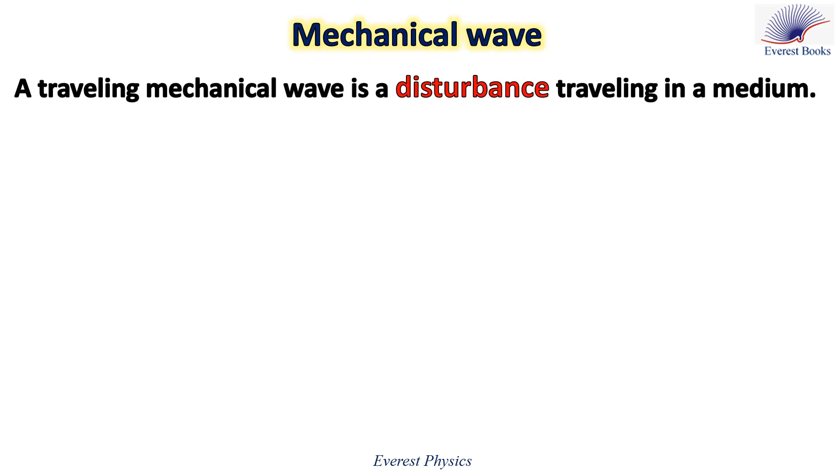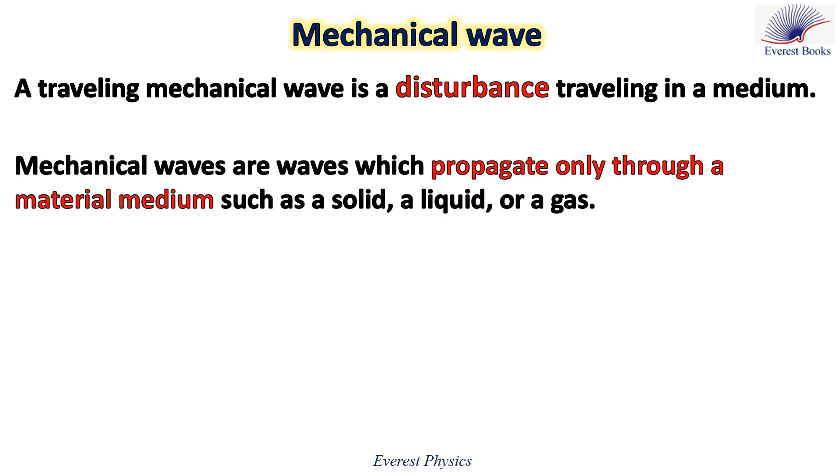A traveling mechanical wave is a disturbance traveling in a medium. Traveling waves are also called progressive waves or continuous waves. Mechanical waves are waves which propagate only through a material medium such as a solid, a liquid, or a gas.